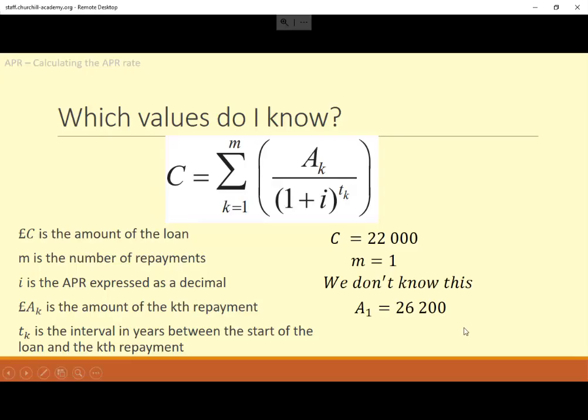And then T_k is the time of that first repayment, how long has it been since the start of the loan? And in this question, the repayment was made after two years. So T is two. You need to get used to that: M is how many repayments there are, and T is how long has it been since the start of the loan. It's not necessarily the same as what M is.